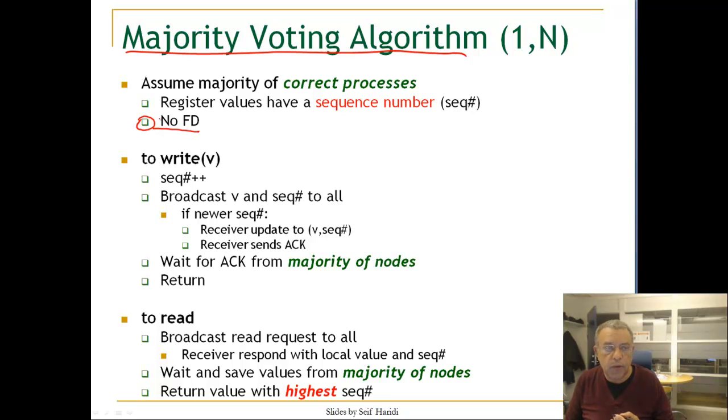Each node will have a sequence number, and register values will have sequence number. So a register value will be a value plus a sequence number.